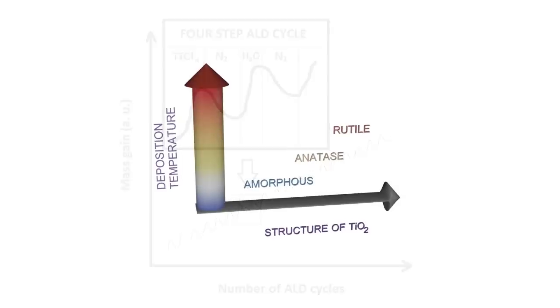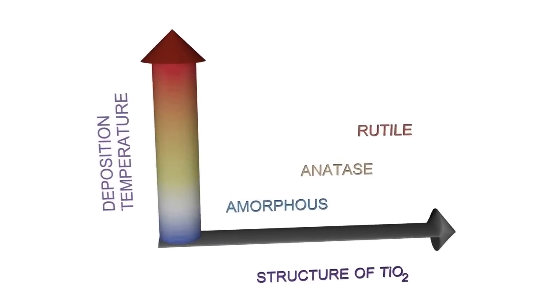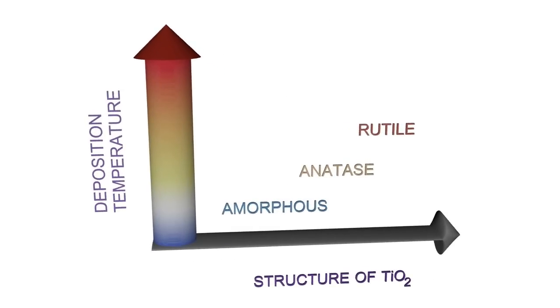The structure of the deposited film depends on the substrate's temperature. For example, amorphous films can be obtained at low temperatures, and crystalline films at higher temperatures.